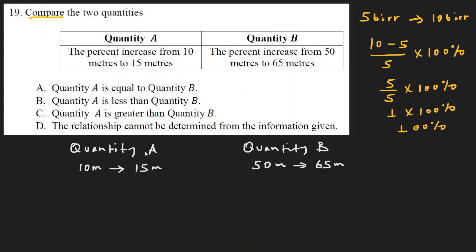Now let's calculate quantity A: from 10 meters to 15 meters. The difference is 15 minus 10, divided by the original value 10, multiplied by 100 percent. So we compute: 15 minus 10 equals 5, divided by 10, times 100 percent.